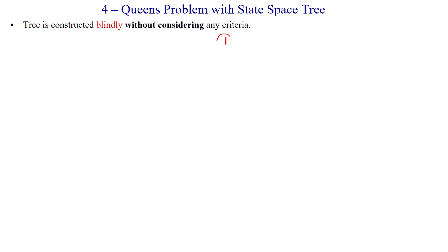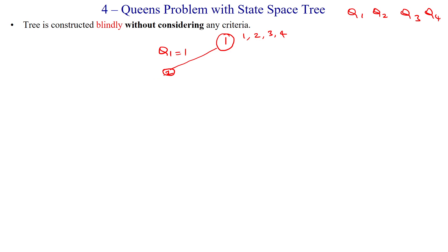Starting from the root node, we have queen 1, queen 2, queen 3, and queen 4. For queen 1, we have four options: first column, second column, third column, and fourth column. I will start with the first column — node number 2. Queen 1 is placed in the first column. For queen 2, the remaining options are second column, third column, or fourth column. Placing queen 2 in the second column leads to node number 3.